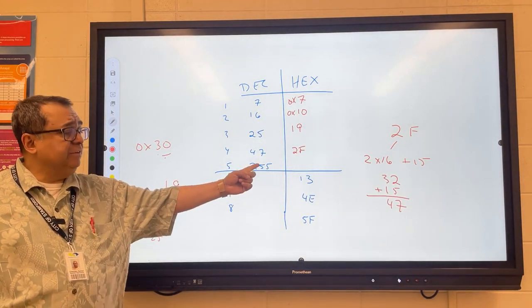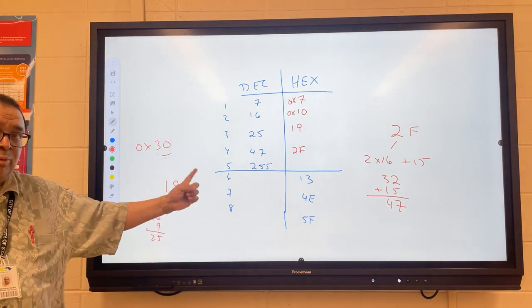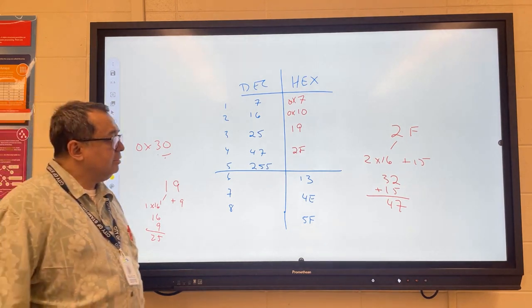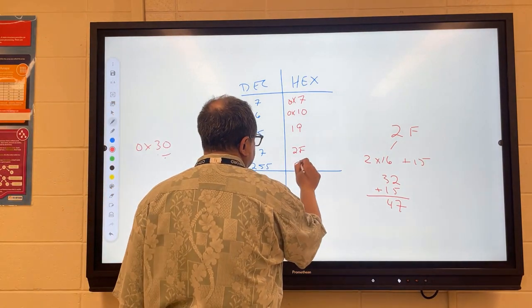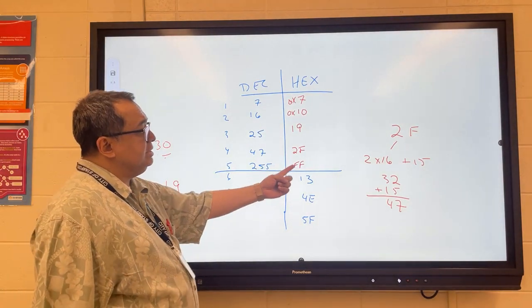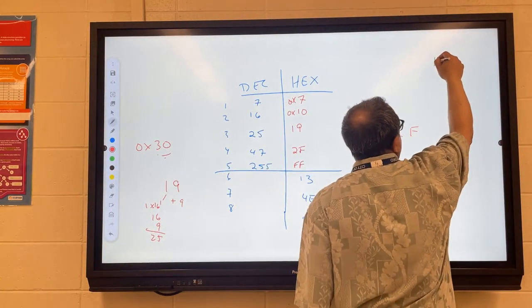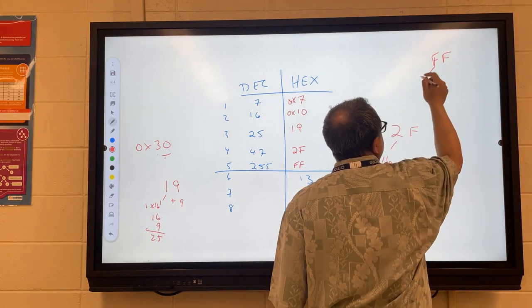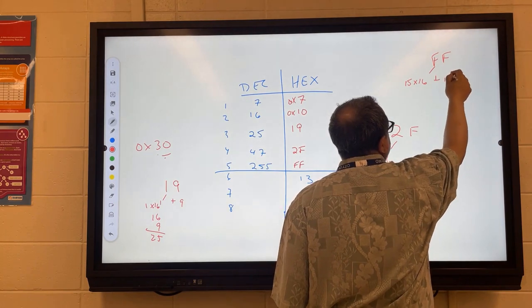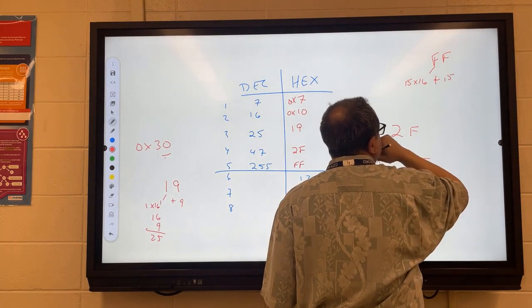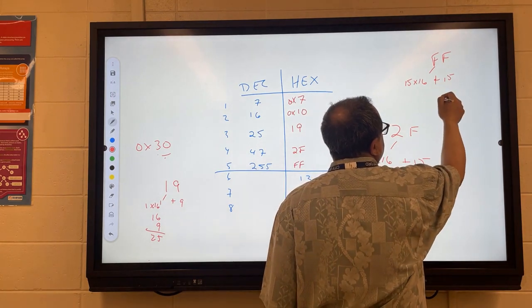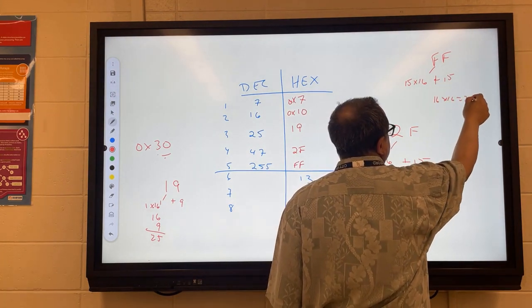Now this 255, that's an important number in computer science, by the way. Yes, Ben? It's just 2Fs like that. And the reason it's FF is if we looked at this FF and we took it apart, this would be 15 times 16 plus another 15.